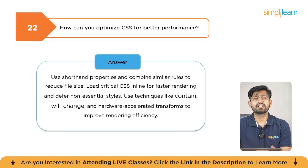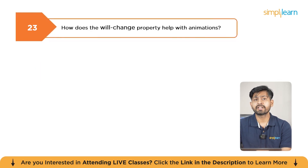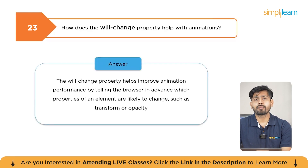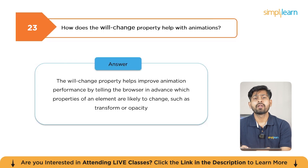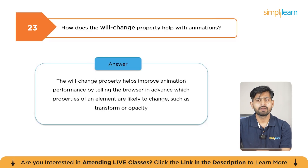How does the will-change property help with animations? The will-change property tells the browser which property is likely to change, allowing it to optimize rendering and avoid lag during animations, thus improving performance.